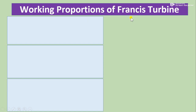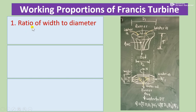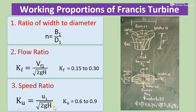Working proportions of Francis turbine: the runner has outer diameter d1 (inlet) and inner diameter d2 (outlet), with widths b1 and b2 respectively. The ratio of width to diameter is b1/d1 = n. Flow ratio: kF = vf1 / √(2gH), with kF in the range 0.15 to 0.30. Speed ratio: ku = u1 / √(2gH), with values for Francis turbine in the range 0.6 to 0.9.